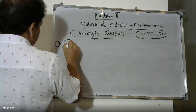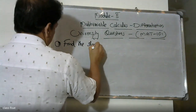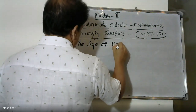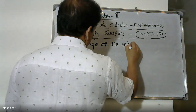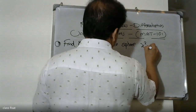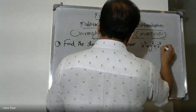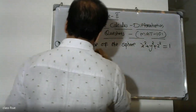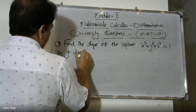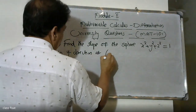Find the slope of the sphere. The equation of the sphere is x-squared plus y-squared plus z-squared is equal to 1, find the slope in the y-direction.